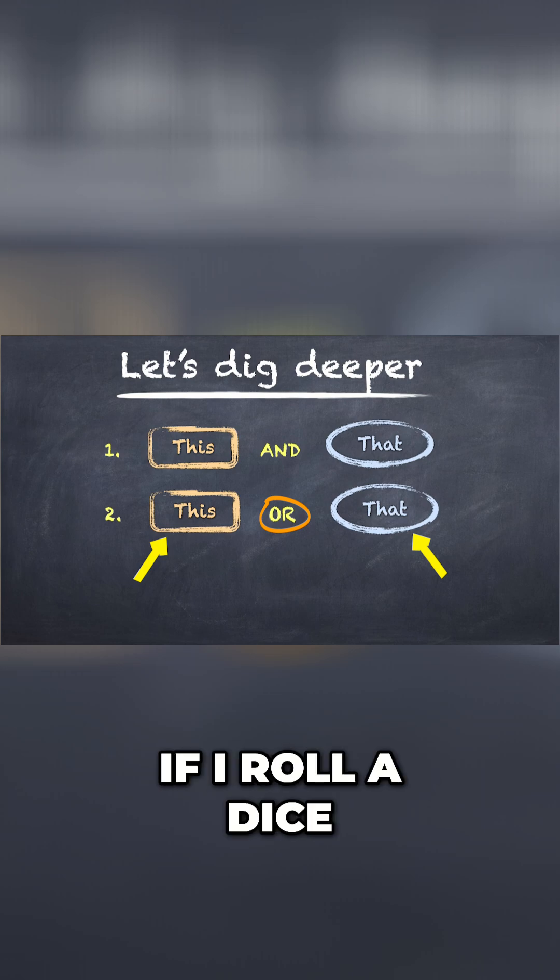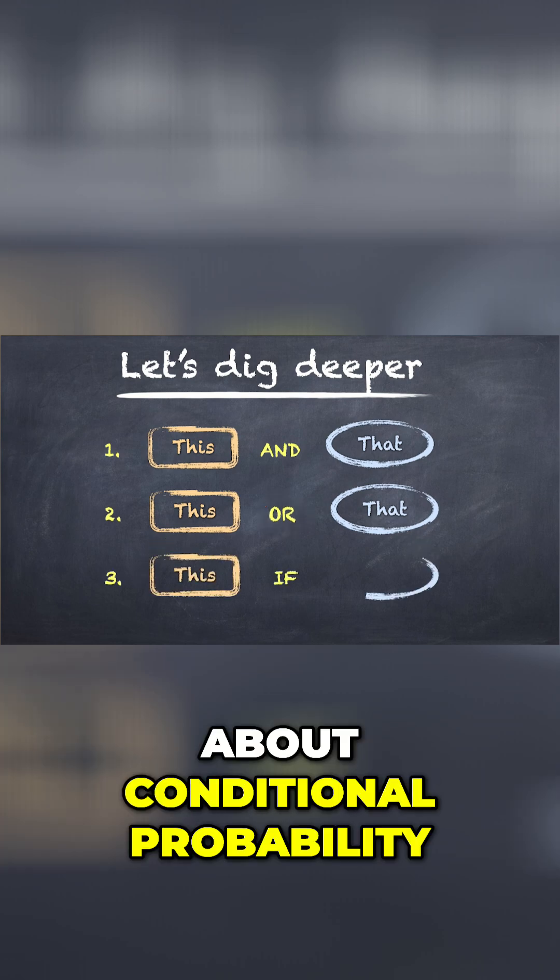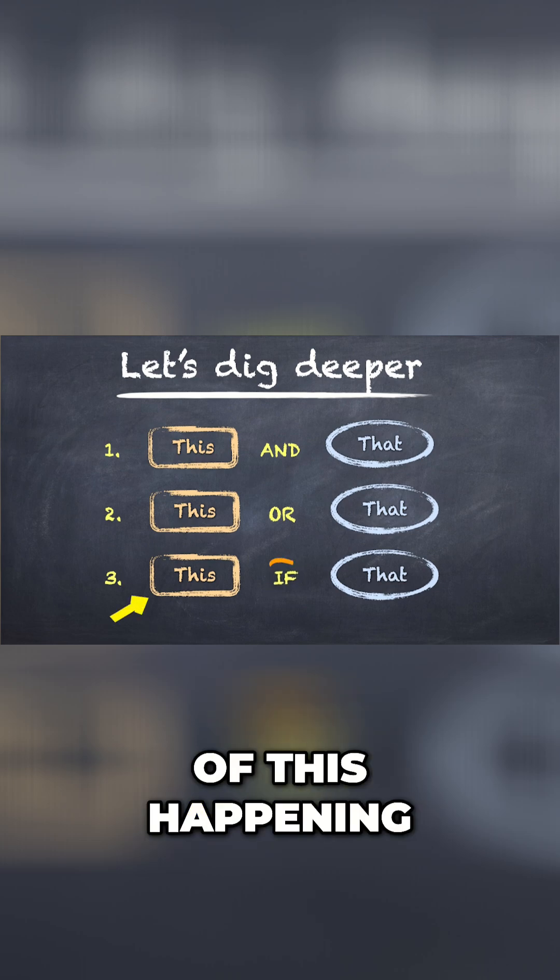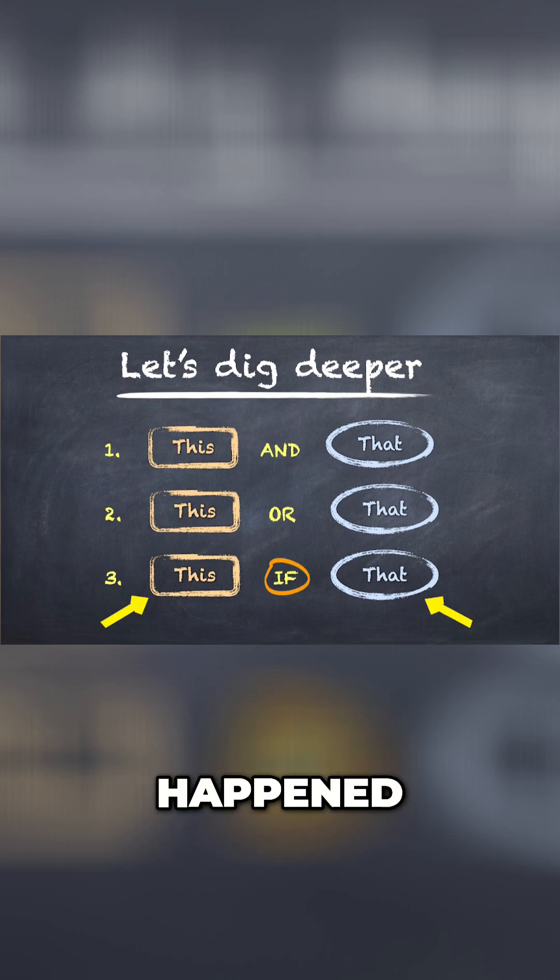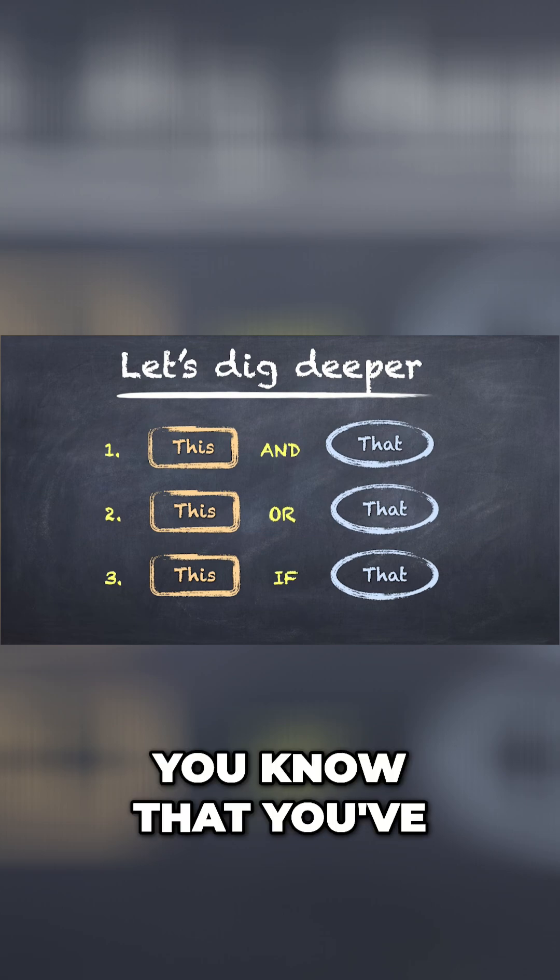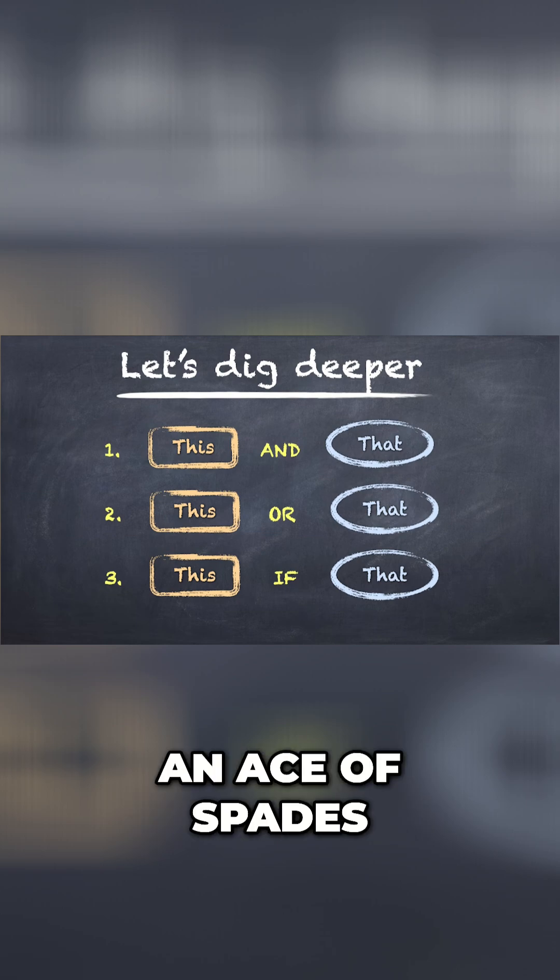We'll also look at the probability of this or that happening. So if I roll a dice, how likely is it that I can get a 3 or a 2? And what about conditional probability? That's the chances of this happening if that has already happened. So if you're playing poker and you know that you've got an ace, what are the chances that it's an ace of spades?